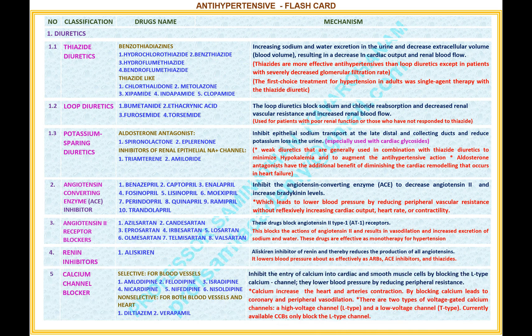Number 5: Calcium channel blockers. Selective for blood vessels: 1. Amlodipine, 2. Felodipine, 3. Isradipine, 4. Nicardipine, 5. Nifedipine, 6. Nisoldipine. Non-selective for both blood vessels and the heart: 1. Diltiazem, 2. Verapamil. Mechanism: inhibit calcium entry into cardiac and smooth muscle cells by blocking the L-type calcium channel, lowering blood pressure by reducing peripheral resistance. Calcium increases heart and arterial contraction; blocking calcium leads to coronary and peripheral vasodilation. There are 2 voltage-gated calcium channels: a high voltage channel (L-type) and a low voltage channel (T-type). Currently available calcium channel blockers only block the L-type channel.